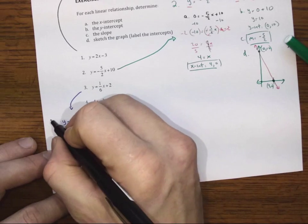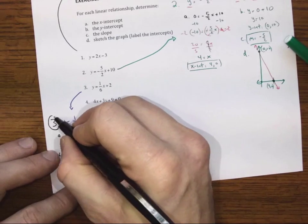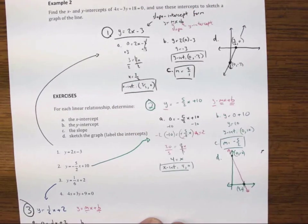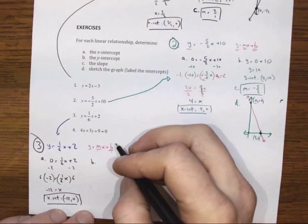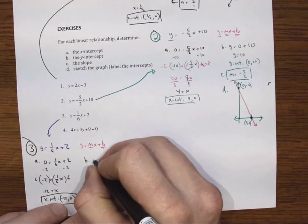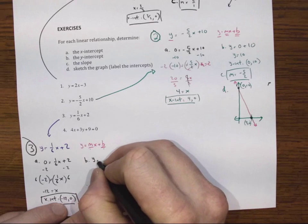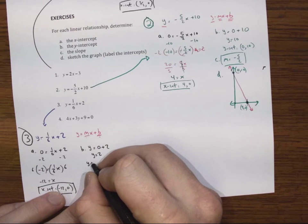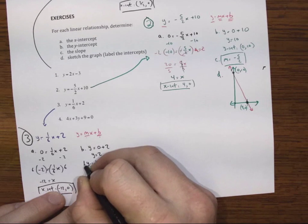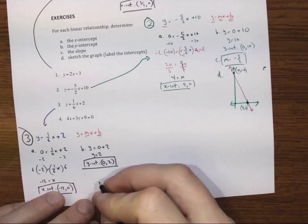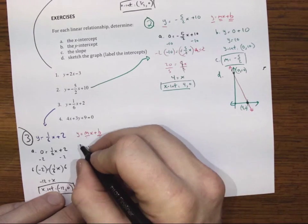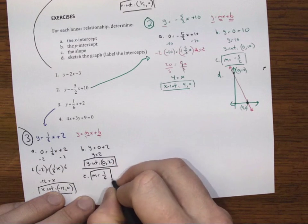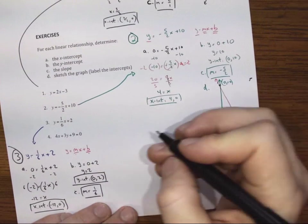For question b, this is question 3, by the way. The y-intercept. So I'll make x equal to 0. And it just means that y is equal to 0 plus 2. Or y is equal to 2. So the y-intercept is at 0, 2. C is my slope. I can see the slope here is my m value. It's just 1 6th. Rise of 1 and run of 6. And a quick sketch.